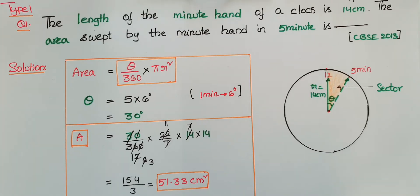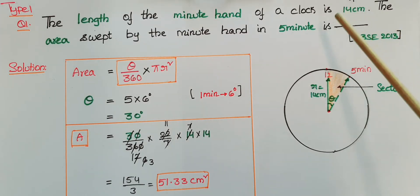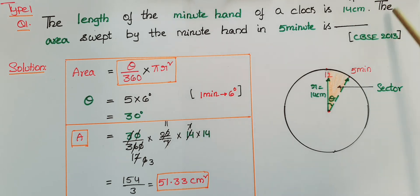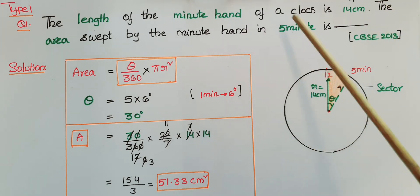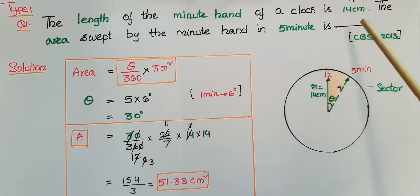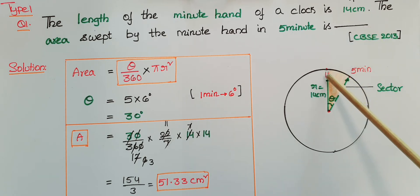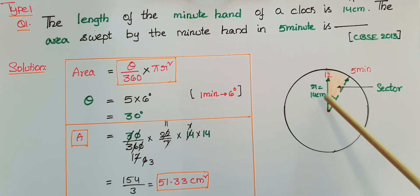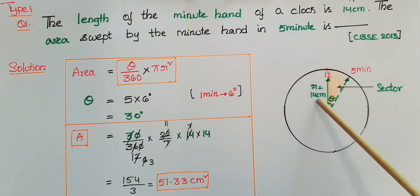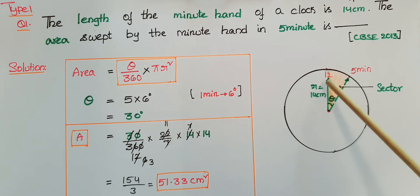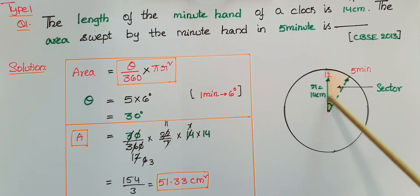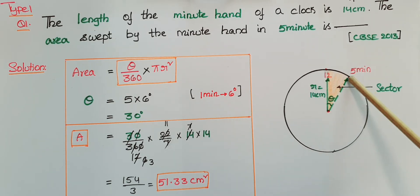This is Type 1. The length of the minute hand of a clock is 14 centimeters. The area swept by the minute hand in 5 minutes is to be found. Here the length of the minute hand r is equal to 14 centimeters, and we have to find the area swept by the minute hand in 5 minutes.